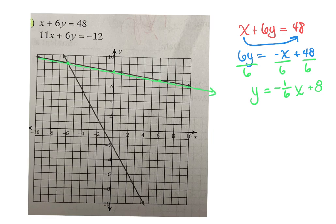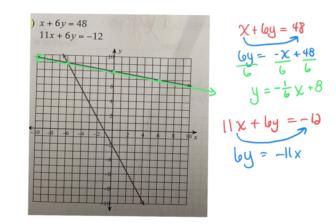Same concept here. We're going to take 11x plus 6y equals negative 12. We're going to move the 11x over, and then divide everything by 6. So we get y equals negative 11/6 x minus 2. We started at negative 2. Going down 11 and right 6 is going to take me off the graph, and it's not taking me in the direction of the line I'm trying to cross.